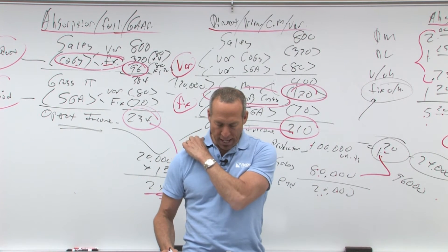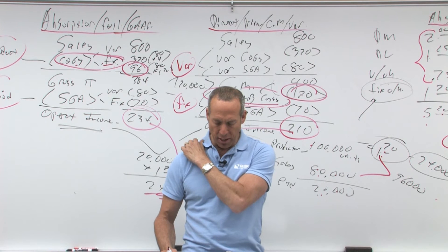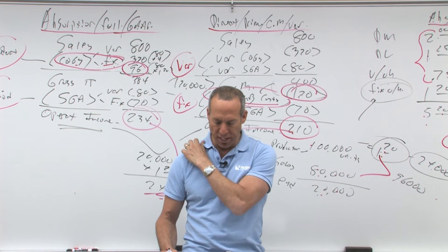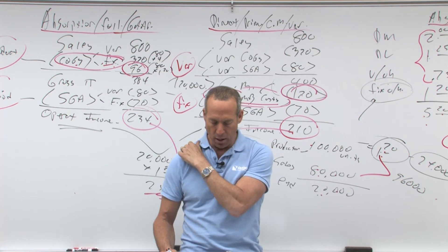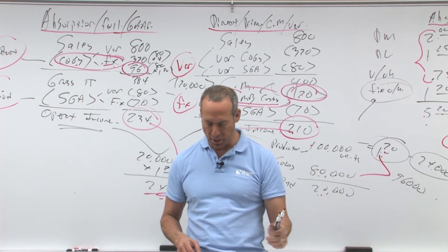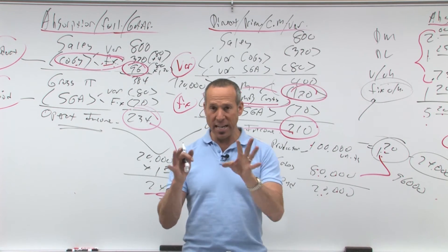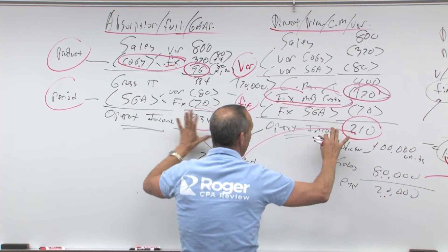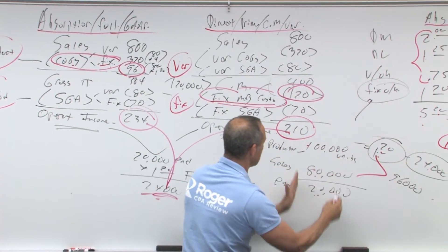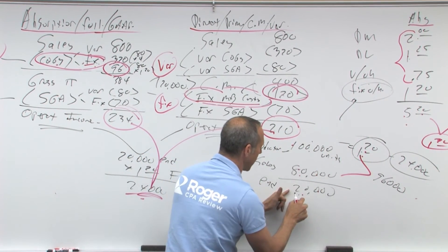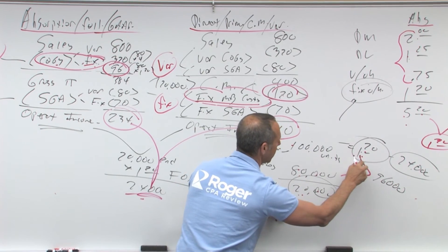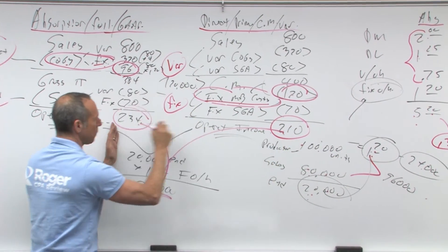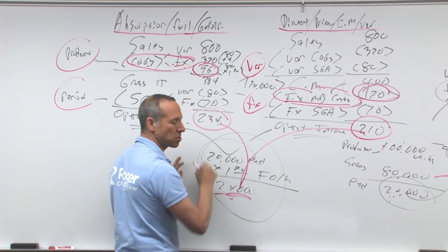All right. Now, on the next page it says the difference in operating income will equal to the fixed manufacturing overhead multiplied by the increase or decrease in units. So the difference in income, the difference in bottom line income is what? It is the treatment of this difference between 20 times the dollar 20. Because as I showed you earlier, the difference was what, $24,000. That's the difference.